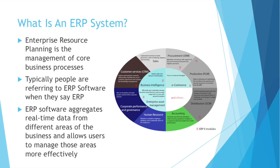First off, what is an ERP system? ERP stands for Enterprise Resource Planning. It's the management of core business processes. Typically people refer to software though when they say ERP — anytime I've ever heard ERP mentioned in industry, it's always referring to software. ERP software aggregates real-time data from all the different areas of your business, allowing users to manage those areas more effectively.